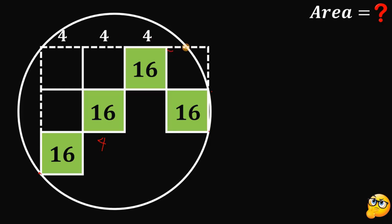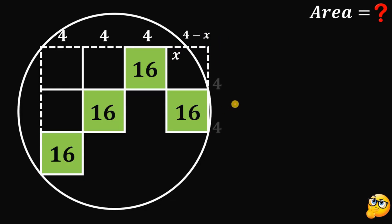Now, let's call this small segment x. And since the whole side must be equal to 4, the remaining segment must be equal to 4 minus x. The rest of the side of the square is also equal to 4. To find the area of the circle, we're going to get the value of x first.